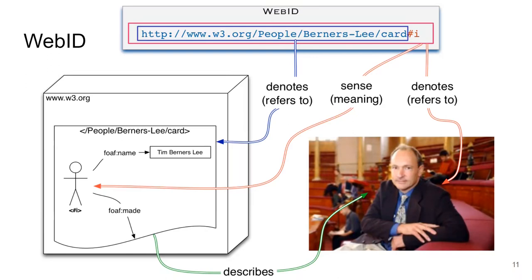Because the WebID has a fragment, when you actually access that URL you technically access the URL without the fragment, giving you the profile document at the slash-card URL. That profile document uses Turtle, which we already know, and it says the document contains the URI with the fragment identifying the person, stating that the person has a name, the person created the document — this is the Turtle profile document.